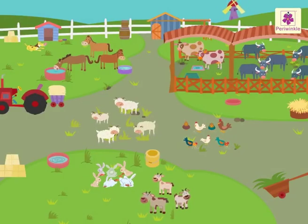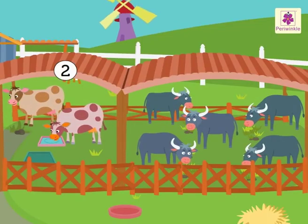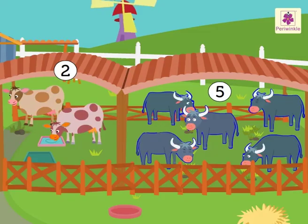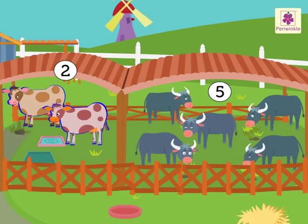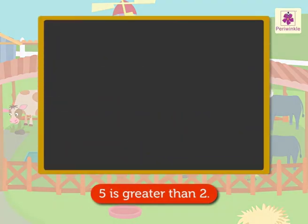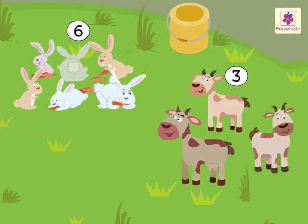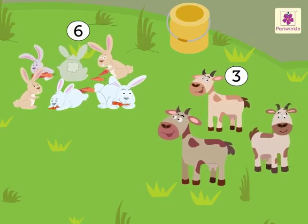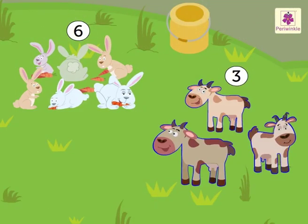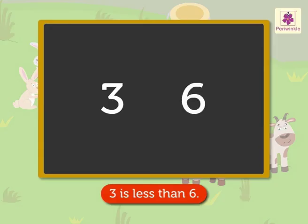Let us learn how to use the sign. Look, there are two cows and five buffaloes in the shed. Five buffaloes are more than two cows. Thus, five is greater than two. We write this as... Can you see six rabbits and three goats? Which are lesser? Goats. Thus, three is less than six. We write this as...